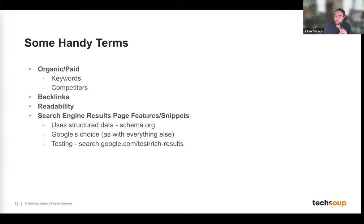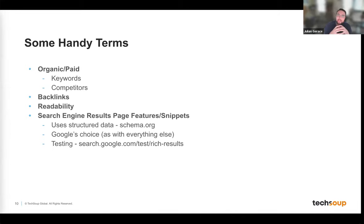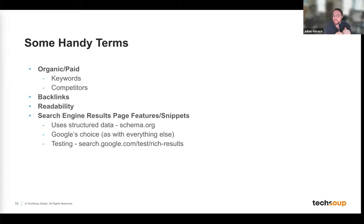Readability is another big one. The quality of your content matters for your search ranking. Readability is basically how easy and simple it is to read the text on your site and how well it communicates your message. SERP features, or search snippets, are things Google might pop up on top of search results. For example, if you search for a business, you might see a business sidebar. Google now tries to give you the answer right away rather than directing people to actual sites.